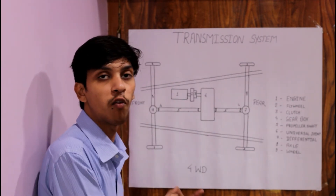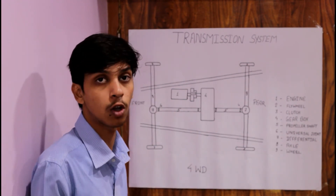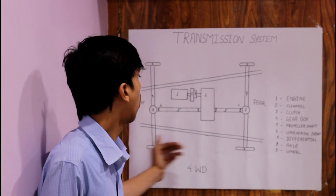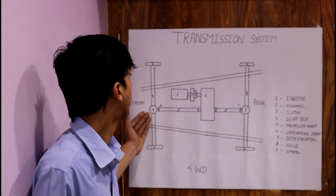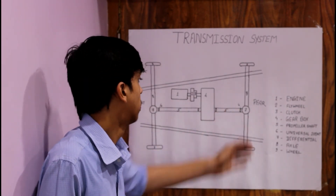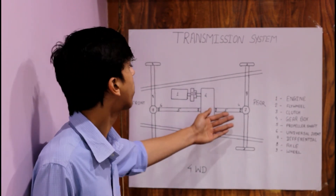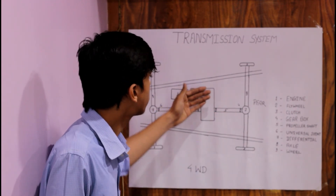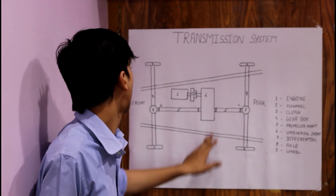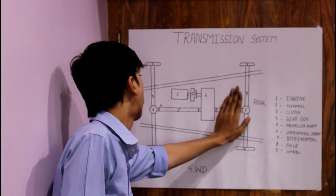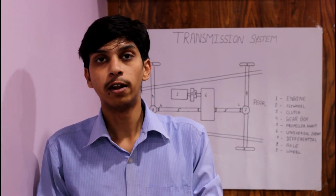This system shown here uses four-wheel drive, also called all-wheel drive, where power is present at all four wheels. Power is transmitted from the gearbox to both the front axle and the rear axle. It can be a front-wheel drive, rear-wheel drive, or all-wheel drive. In rear-wheel drive, only the rear part is working. In front-wheel drive, only the front system works.